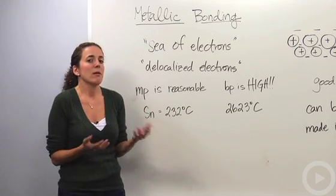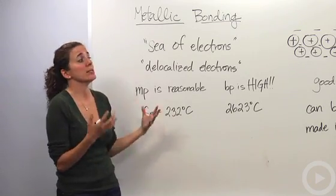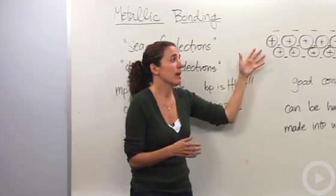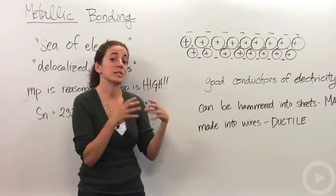But what happens when two metals come together? Well, they actually do metallic bonding. And so when these metals come together, and it can be just one particular metal, it doesn't necessarily have to be two different metals, it's just the metals are together.